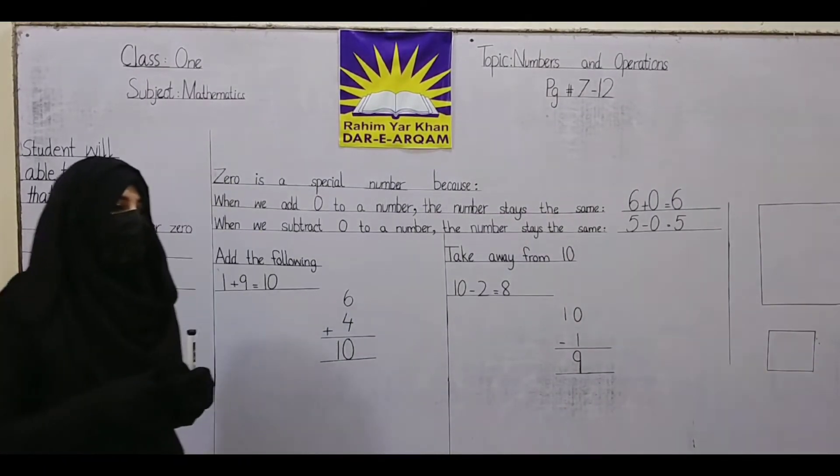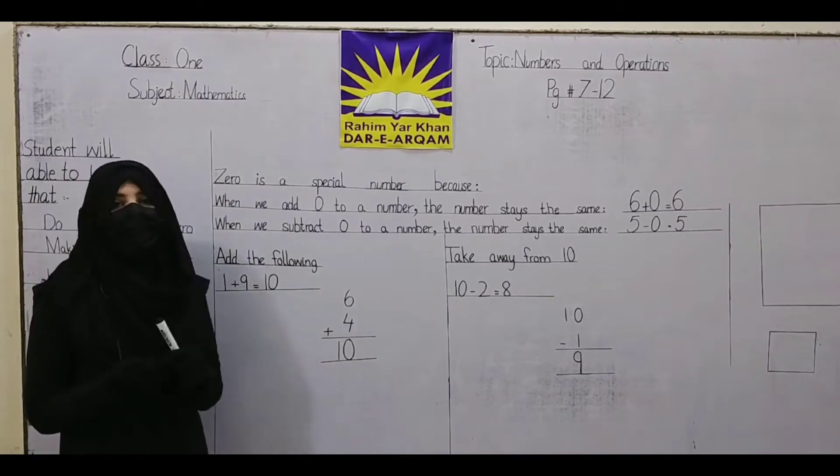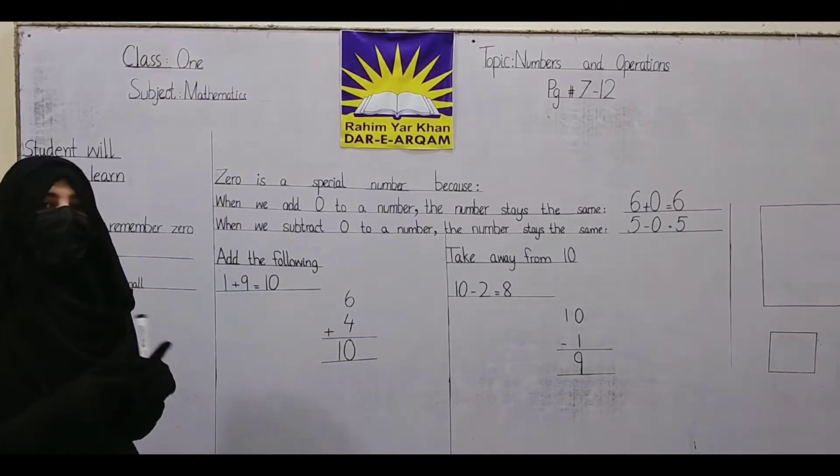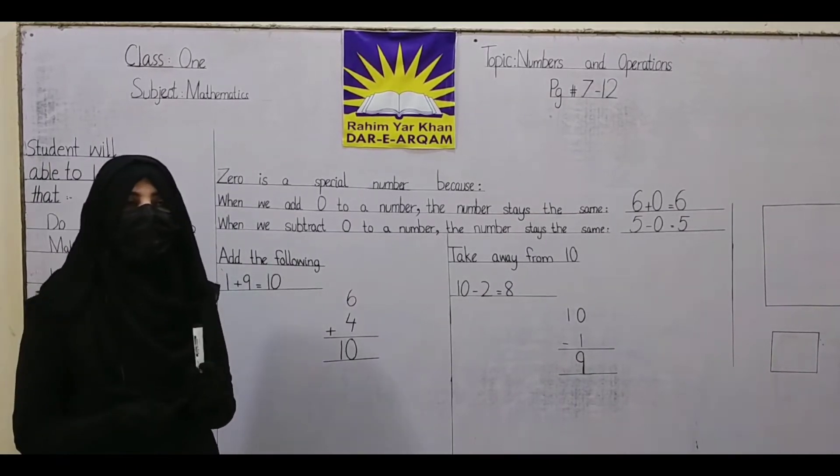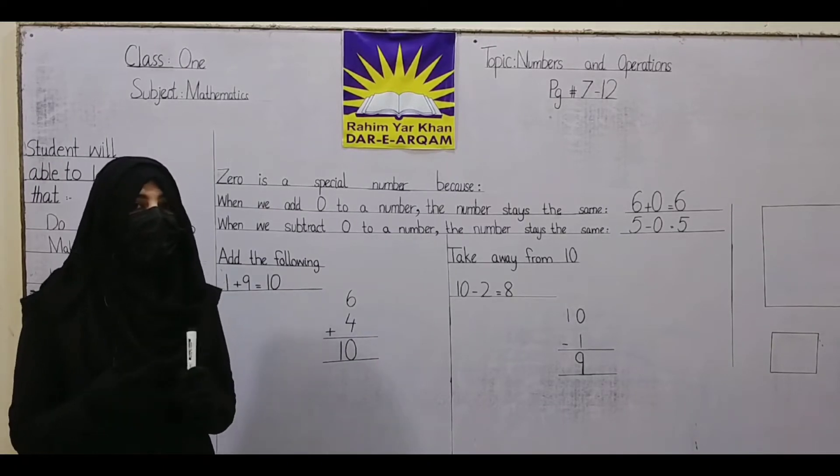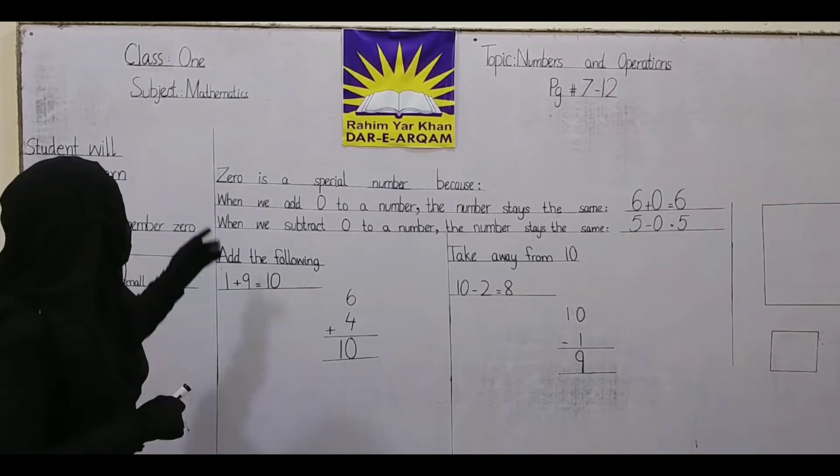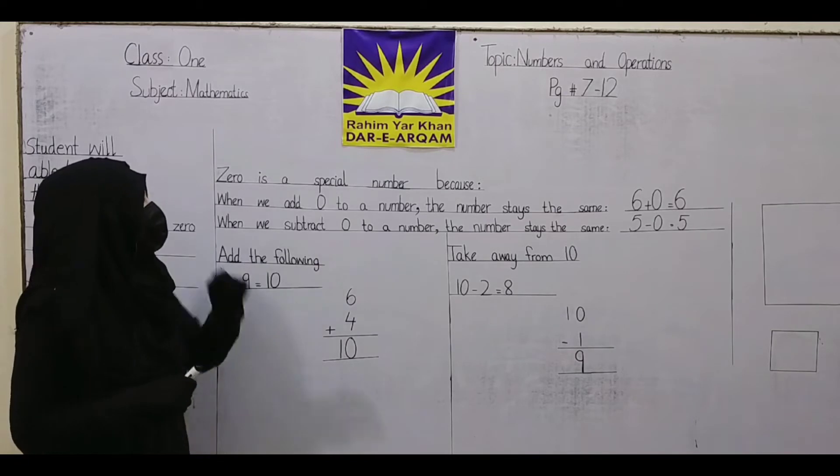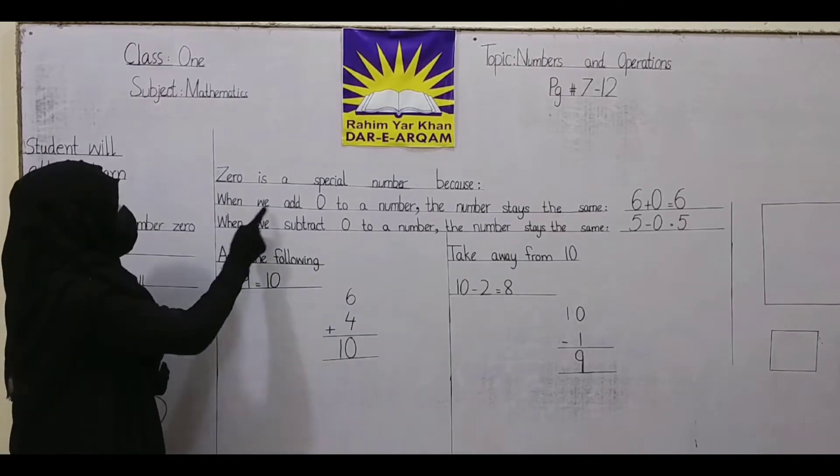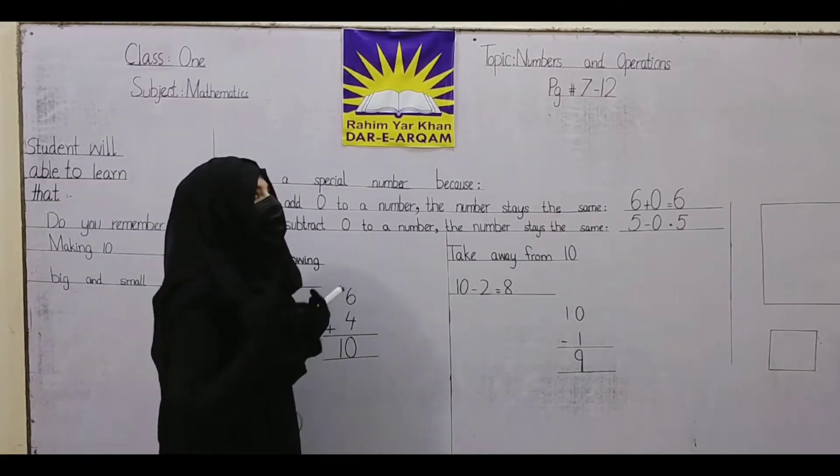When we add 0 to a number, the answer stays the same. When we subtract 0, the answer also stays the same. Zero is a special number because when we add 0 or subtract 0, the number doesn't change.